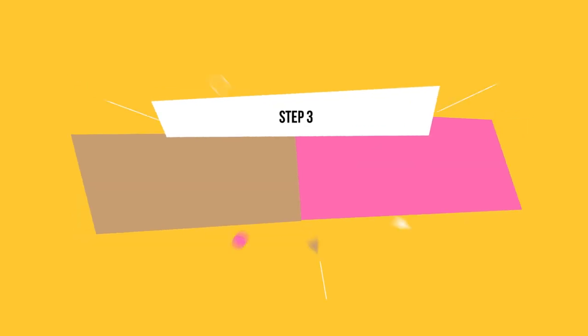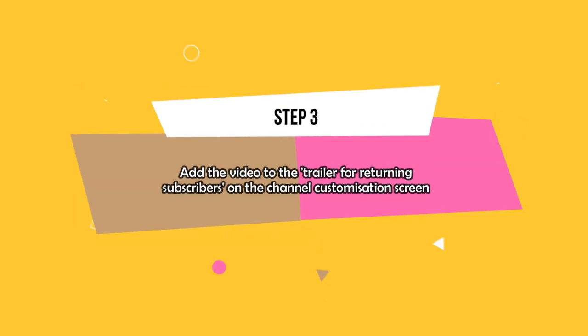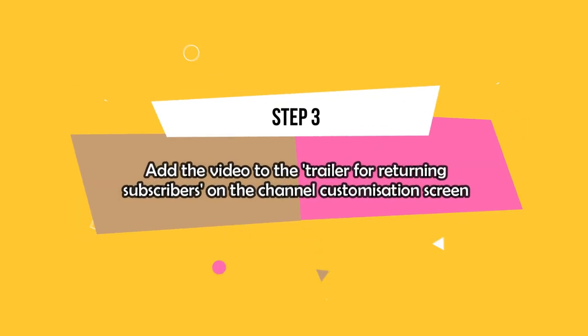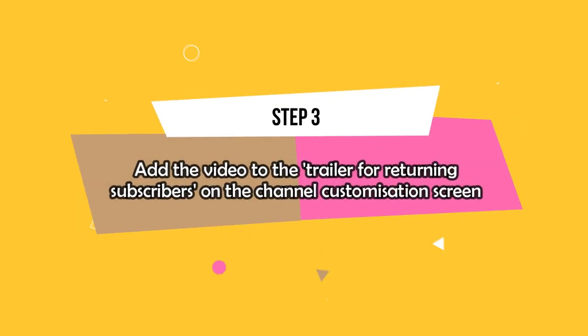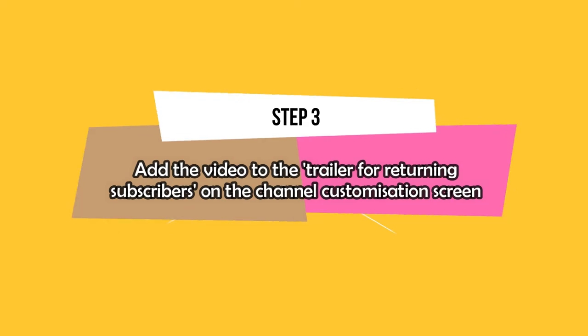After your video has finished uploading, go to the customisation screen in YouTube Studio. When you are there, scroll down to a button that says 'add trailer for returning subscribers' and add the video that you just made. This will make it visible to your subscribers when they go to your channel page and no one else.